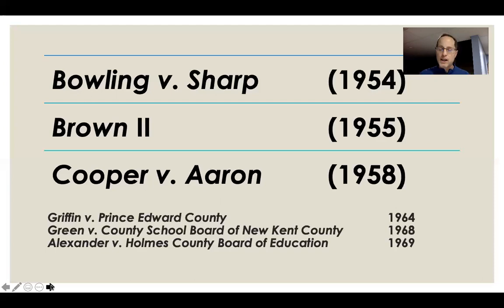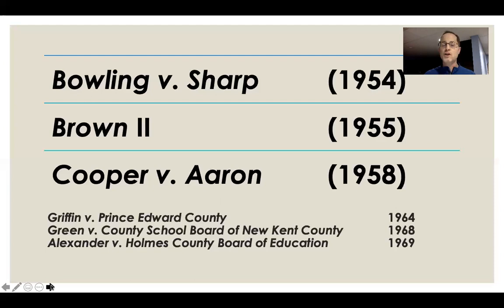Later, in Green v. County School Board of New Kent in 1968, the Supreme Court addressed 'all deliberate speed' — because by 1964, only 2% of Black students attended an integrated school. In 1968, the court said they must get to the 'root and branch' of this issue. Finally, in 1969, the Warren Court ended 'all deliberate speed' in a case dealing with Mississippi, arguing that now was the time. As Dr. King wrote in his Letter from Birmingham Jail: 'wait' almost always means 'never.'